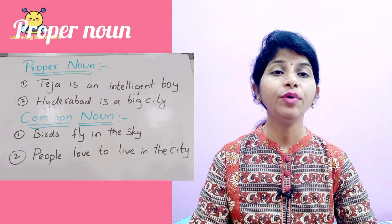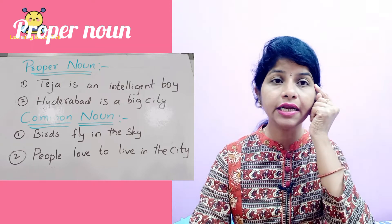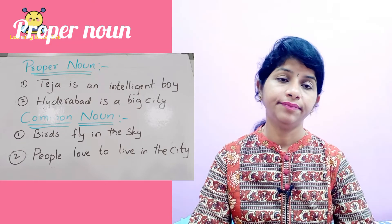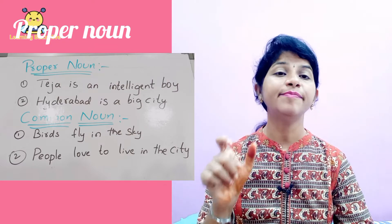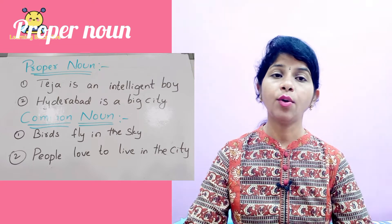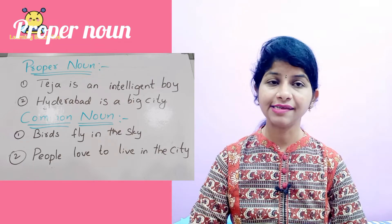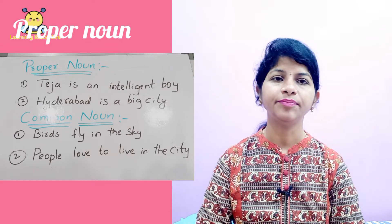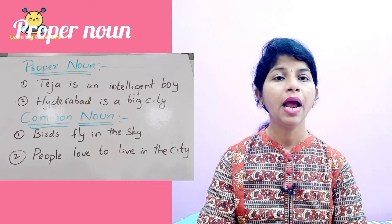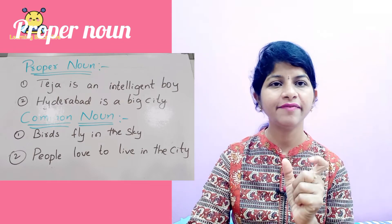Let's see a few examples of proper noun. 'Teja is an intelligent boy.' Here, Teja is a specific name of a person. 'Hyderabad is a big city.' Here, Hyderabad is a specific name of a place. So, proper noun is also known as a proper name — a specific name.